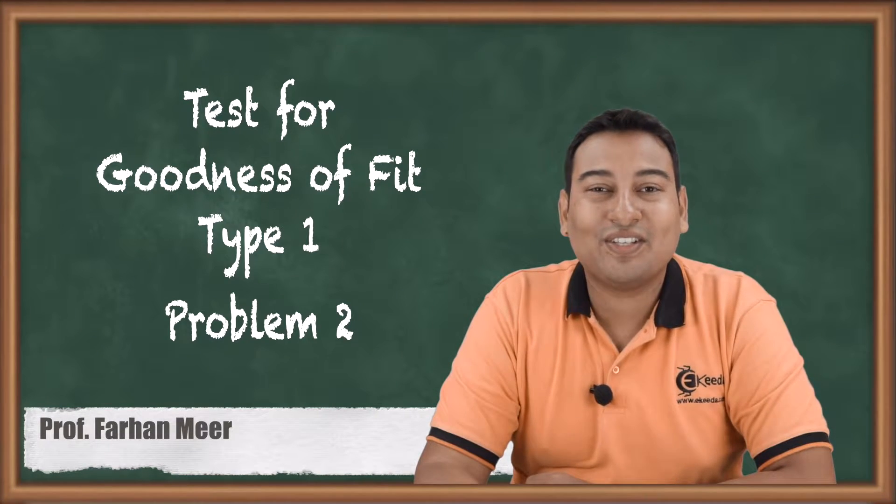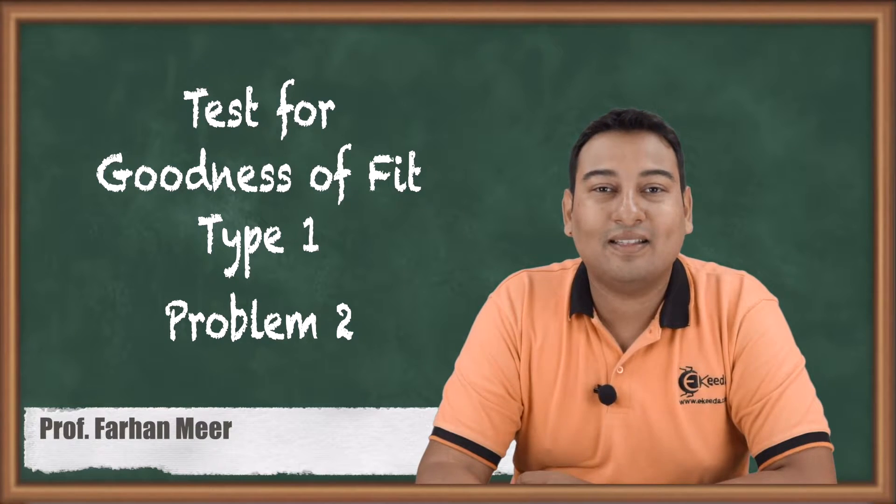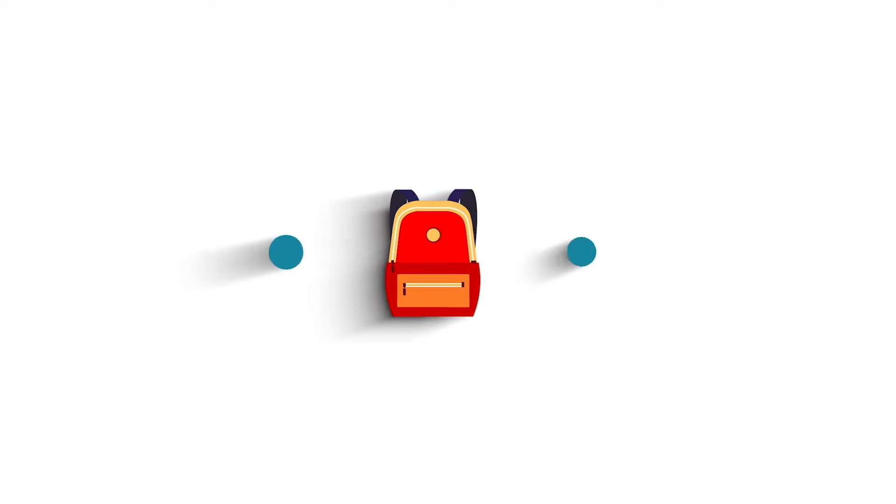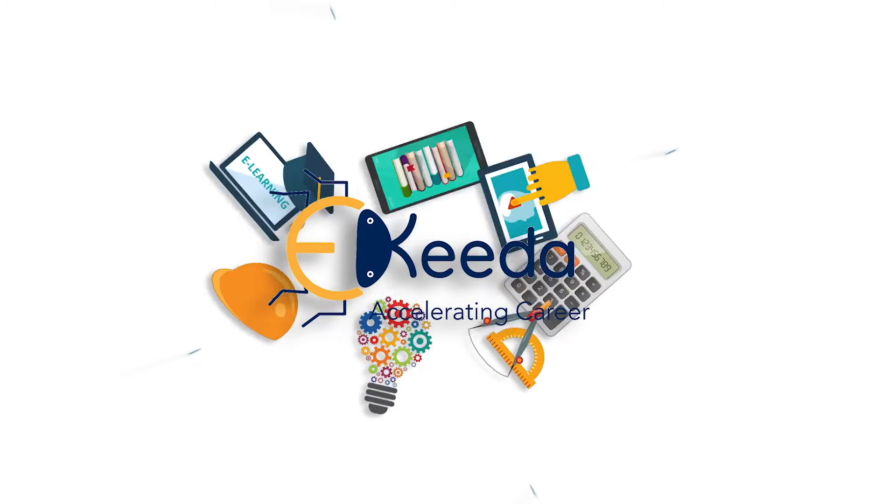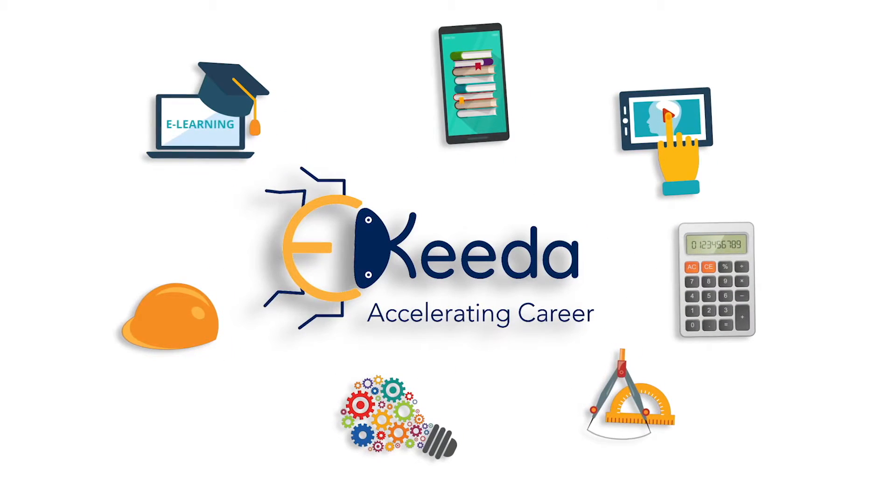Hello friends, in this video we are discussing chi-square test type number one, that is test for goodness of fit. This is our second example. In the last video we discussed whether the breakdowns are uniformly distributed or not.